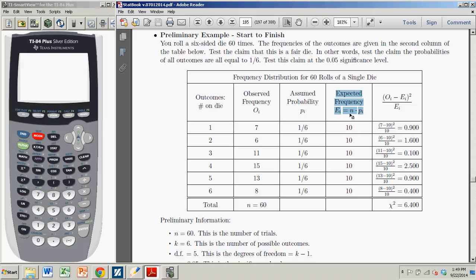That was just the total n, 60, times each one of the probabilities. So we would expect 10 of each. And of course, we didn't get 10 of each. We've got these observed frequencies. So we're going to test whether or not this is a fair die, or whether these observed frequencies are significantly different than what we expected.